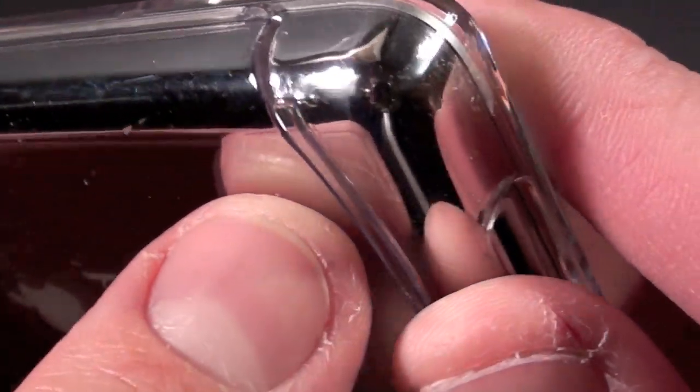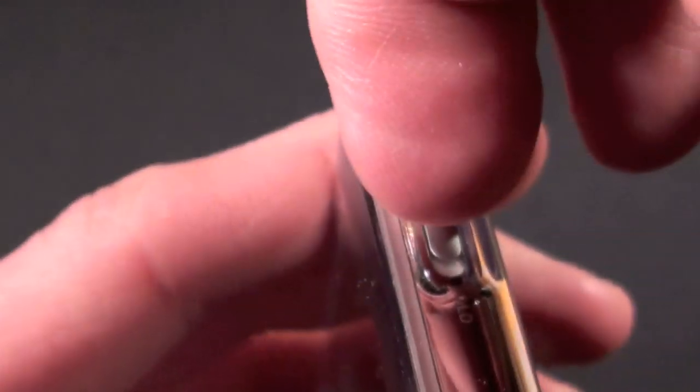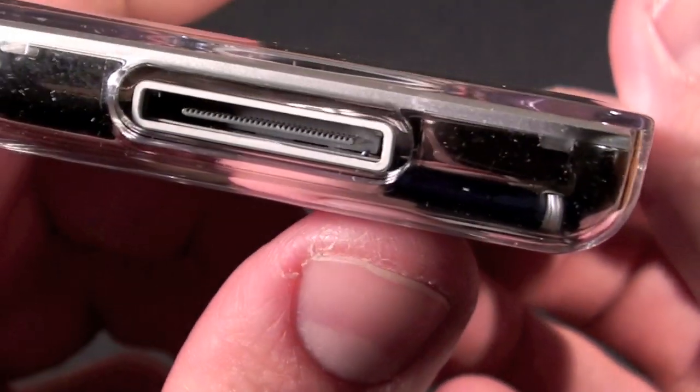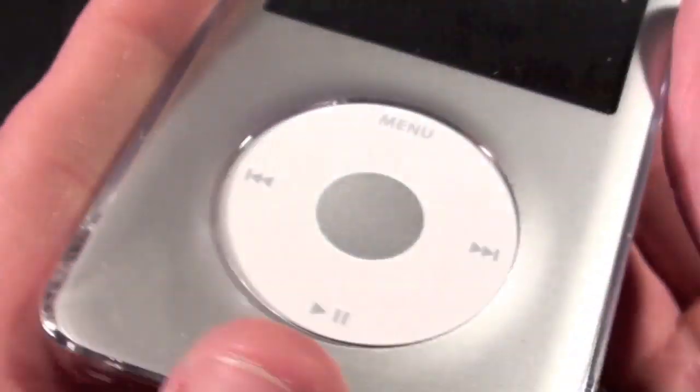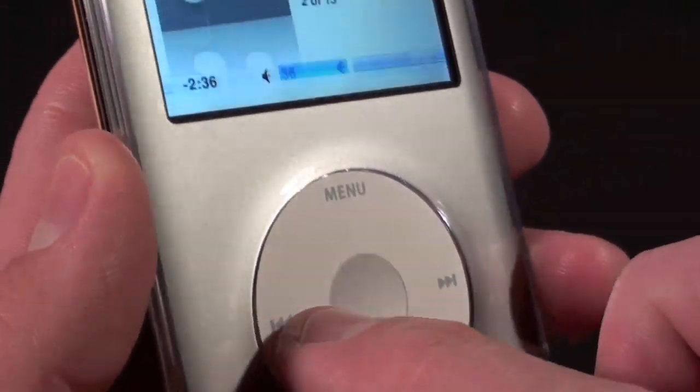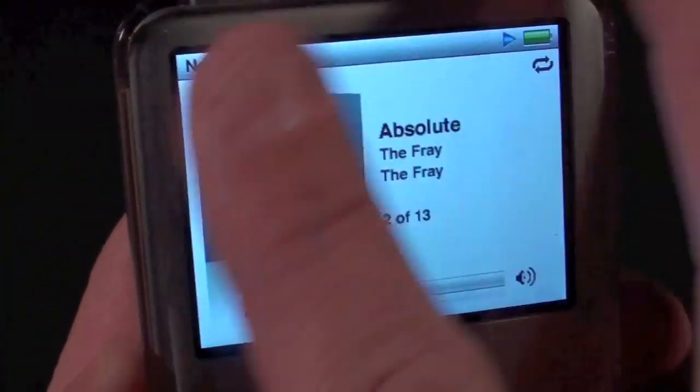You can see the seams are very tight. They fit perfectly. I don't see any gaps or any ill-fitting parts. There's plenty of room to operate the hold switch, plenty of room for the headphone jack, for your dock connector, and that's about all. And of course the click wheel is exposed but the glass itself is covered.